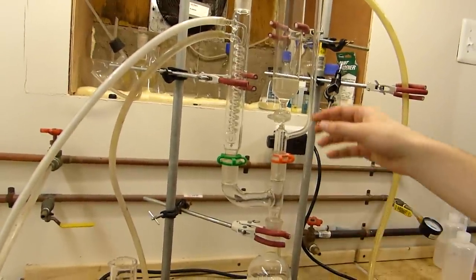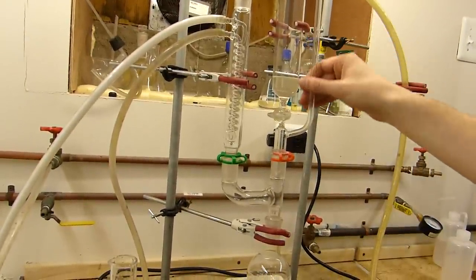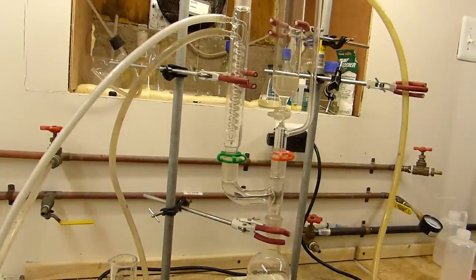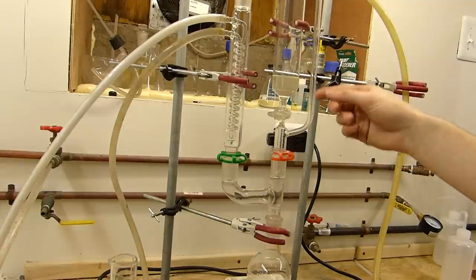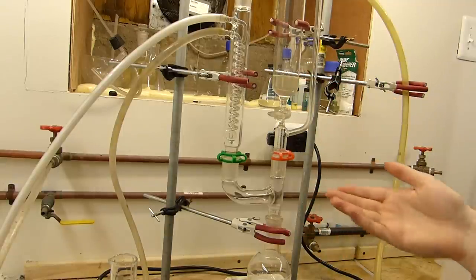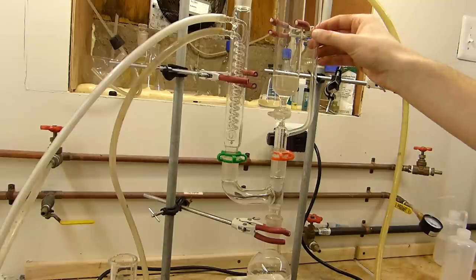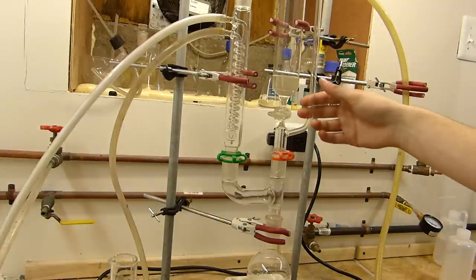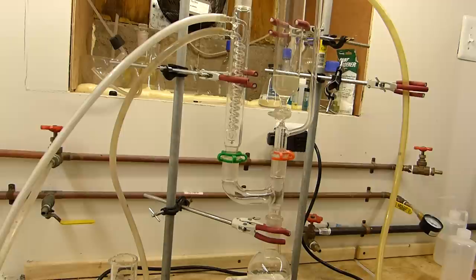In the other socket on the Claisen adapter, we have, in this case, a 250 milliliter pressure equalizing addition funnel. Now, it's important that it's pressure equalizing, because otherwise, you won't be able to drip the ammonium sulfate solution nearly as effectively, which will give rise to erratic ammonia evolution, and that's very bad for a number of reasons that I'll get into after this thing gets going.